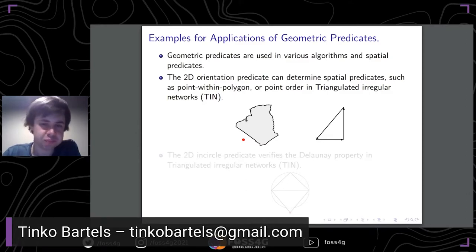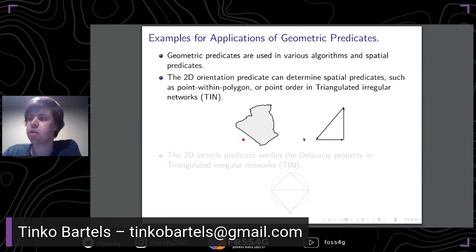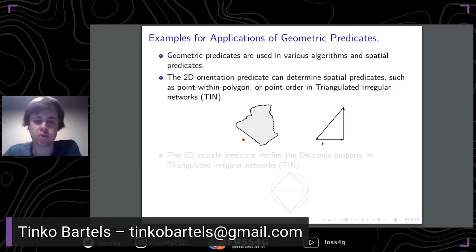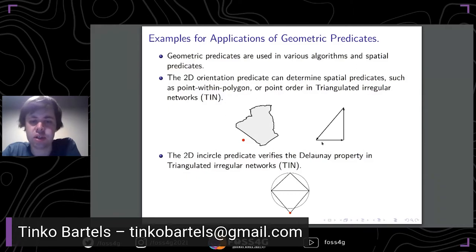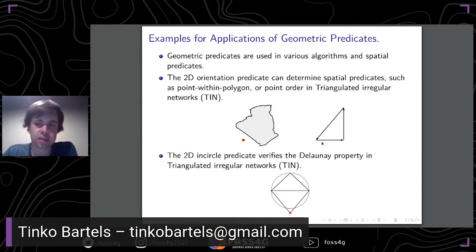Another example is the construction of triangulations. If we want to construct a triangulation of oriented triangles, we would repeatedly call the 2D orientation predicate to determine whether the triangle should be ABC or ACP. Another geometric predicate is the 2D circle predicate, which can be used to verify the Delaunay property. It takes 4 points and checks whether the 4th point lies inside, on, or outside of the circumcircle of the first 3 points.